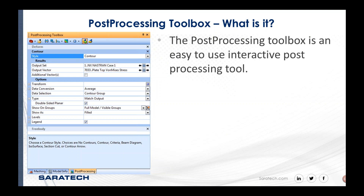So the post-processing toolbox — what is it? It's a collection of post-processing tools that are easy to use and easy to navigate. There are other ways to post-process — I call it the F5 method, where you press F5 and define what you want to deform and contour. The reason I recommend using the post-processing toolbox is that it's all located in one location. Inside this toolbox we can change colors, fringe plots, deformed plots, change the scales, and all sorts of changes in one easy interactive location.